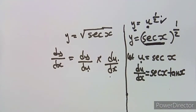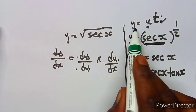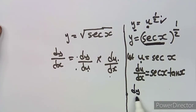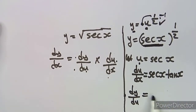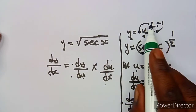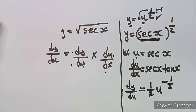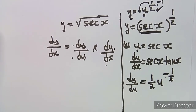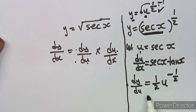From dy/du, using a normal derivative, you multiply by the exponent then subtract one. So it's going to be one-half times u to the exponent of one-half minus one, which from your calculation gives a negative half. So dy/du = (1/2) u^(-1/2).